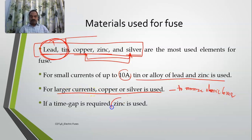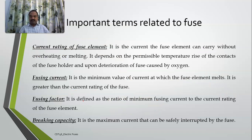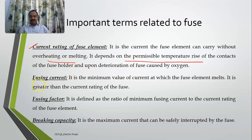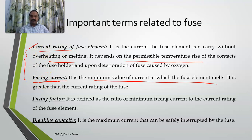If a time gap is required, zinc is the best option. Now the important terms related to a fuse: first, current rating — it is the current which the fuse element can carry without melting, essentially the normal current in the circuit. It depends on the permissible temperature rise and the contacts. Second, fusing current — it is the minimum value of current at which the fuse element melts. It is slightly higher than the current rating.